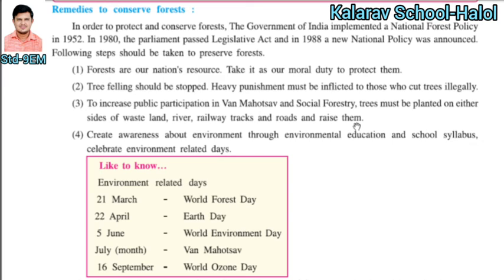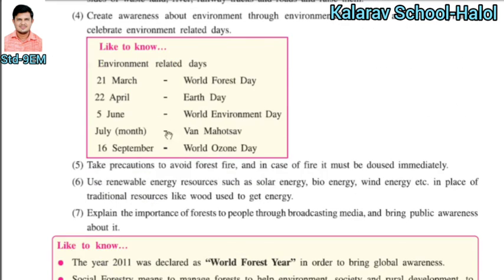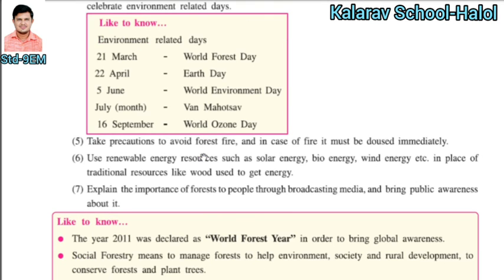Create awareness about the environment through environmental education in school syllabi and celebrate related days. These dates must be remembered: 21st March is World Forest Day, 22nd April is Earth Day, 5th June is World Environment Day, July month is the month of forests, and 16th September is World Ozone Day.